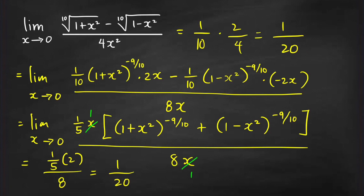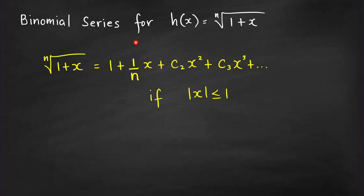Let me now share with you the trick I'm using to evaluate limits quickly. I'm using the binomial series expansion for the nth root of 1 plus x. This nth root of 1 plus x can be written as an infinite sum — you may think of this as a Taylor series, or in particular a Maclaurin series, because it is expanded where the center is at 0. This infinite series is convergent for all x between negative 1 and positive 1, inclusive of the endpoints.